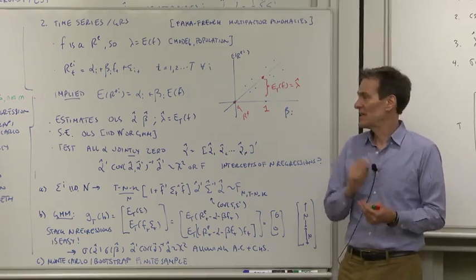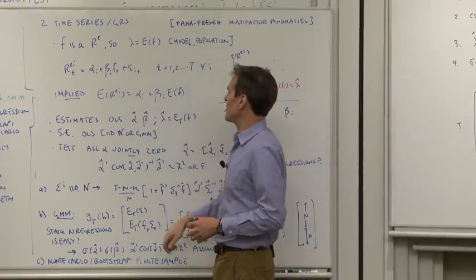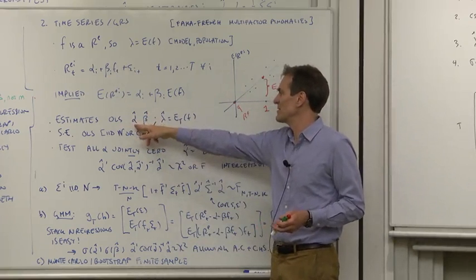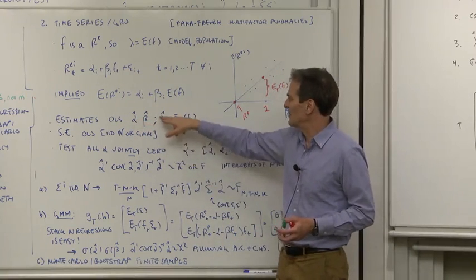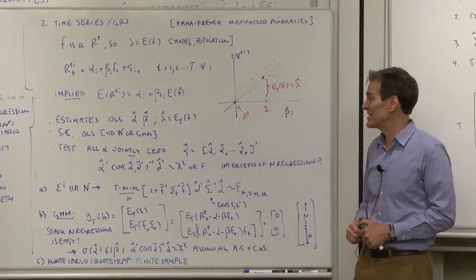Estimates, standard errors, and the test statistic. The estimates, well, that's just ordinary least squares. So ordinary least squares estimates of alpha and beta. And the factor risk premium is just the sample mean of the factor. So getting the estimates is easy.